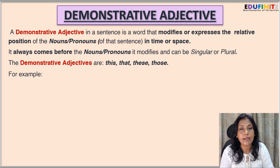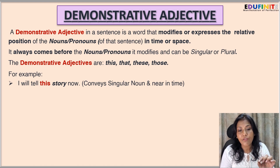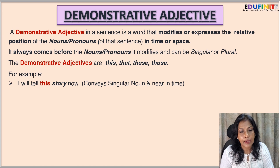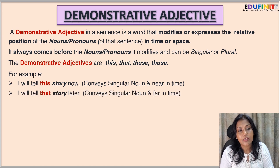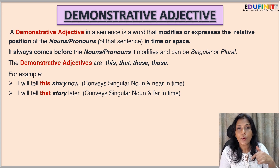Let's look into some sentences. 'I will tell this story now.' Here the noun is 'story' and the demonstrative adjective is 'this,' conveying that the noun is singular and it is near in time — meaning now, not far away. 'I will tell that story later.' Here 'that' conveys the noun 'story' is singular but refers to a time that is far away — it will be done later on.